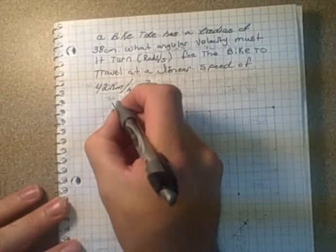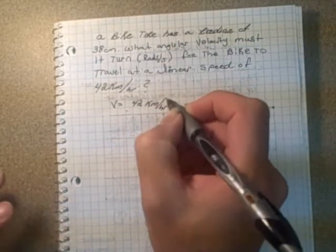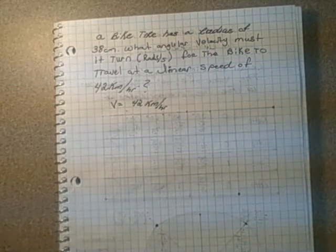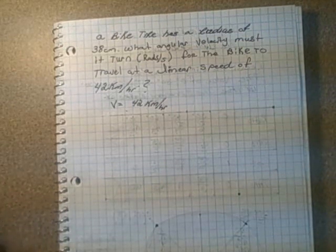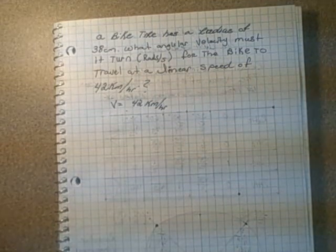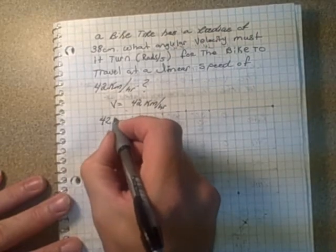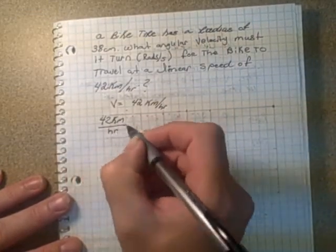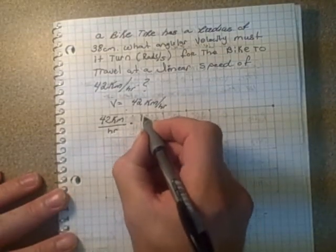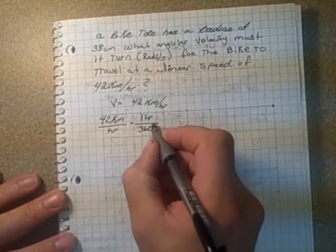We're doing a bit of the opposite of what we did last time. We have a linear velocity of 42 kilometers per hour, and we want radians per second, with the tire radius in centimeters. I'll convert both the radius and the velocity into meters, and convert the velocity into meters per second. Starting with 42 kilometers per hour, we eliminate the hours first: 1 hour equals 60 minutes times 60 seconds, or 3600 seconds.